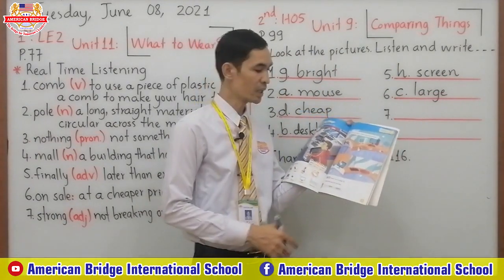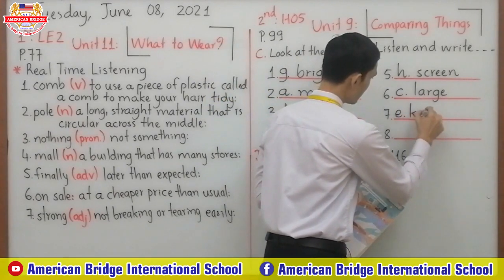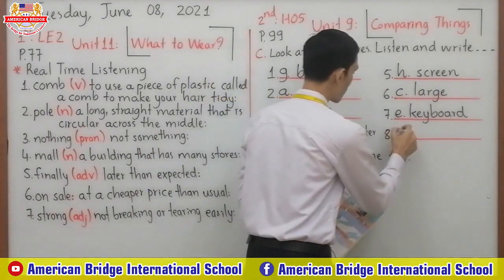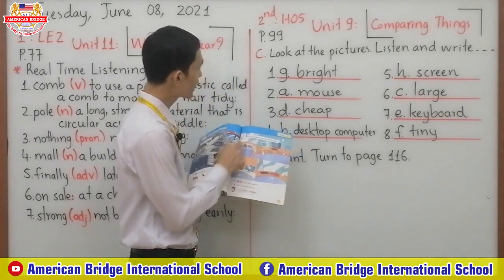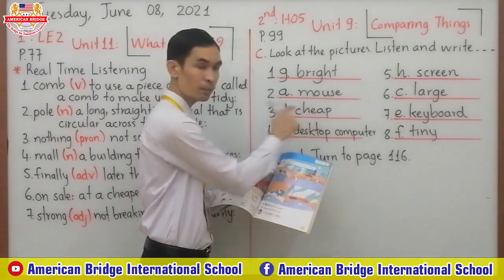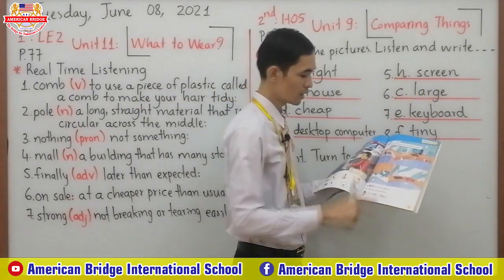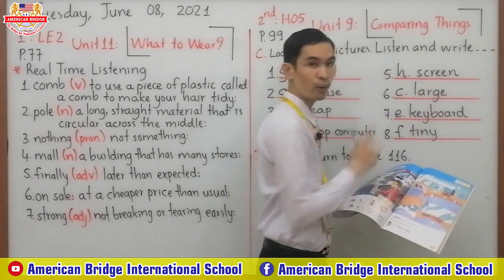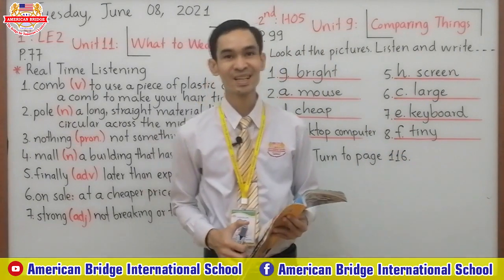Now let's continue to number seven and number eight. Number seven must be keyboard, letter E. The last one, number eight, must be letter F — tiny. So you can check your answers again: one, G, bright; two, A, mouse; three, D, cheap; four, B, desktop computer; five, H, screen; six, C, large; seven, E, keyboard; eight, F, tiny. Are your answers correct? I hope your answers are correct.